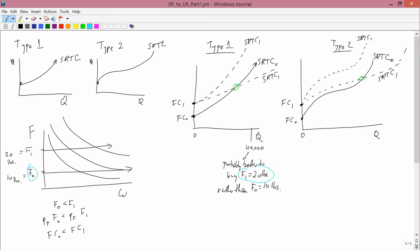In other words, for a really large Q, SRTC1 is probably below SRTC0. And that, for SRTC1 to be below SRTC0 at really large Q, that's the crossing scenario. That's not the scenario where the lines didn't cross, that's the scenario where the lines do cross. The same thing is true for type 2. If you've got a really large quantity out here, it's probably cheaper to buy 20 pounds of fertilizer, so SRTC1 is probably lower than SRTC0. So way up here, SRTC1 is probably lower than SRTC0. Again, that's the scenario where the curves cross.